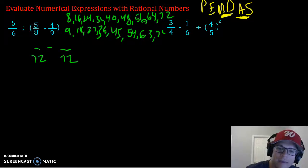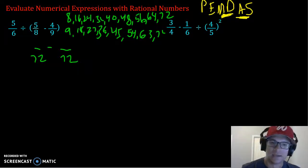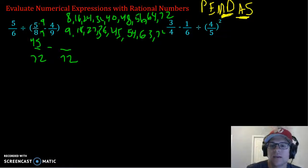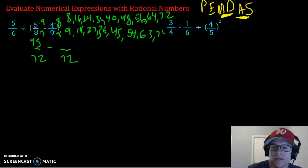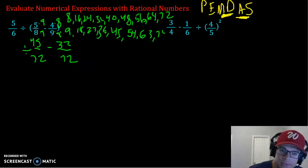So in order to get from 8 to 72, we have to multiply 8 times 9, so times 9 times 9. 5 times 9 gives us 45. Then to go from 9 to 72, multiply times 8, times 8. 4 times 8 is 32, and we're going to bring down the rest of this problem.